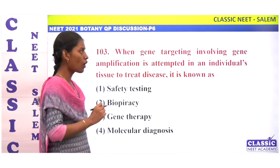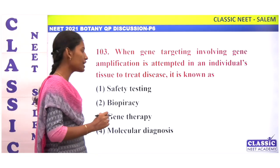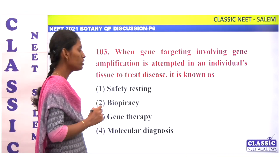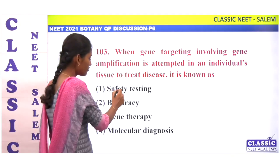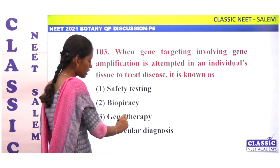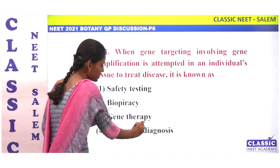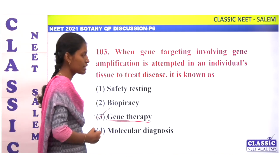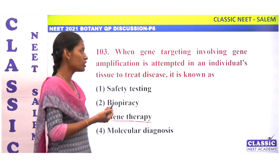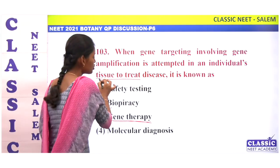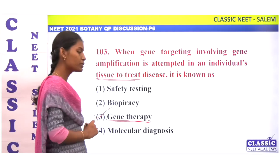Next question: when gene targeting involving gene amplification is attempted in an individual's tissue to treat disease, it is known as what? Options are safety testing, biopiracy, gene therapy, and molecular diagnosis. The correct answer is gene therapy — therapy means treatment, and gene amplification in an individual's tissue is gene therapy. Option 3.